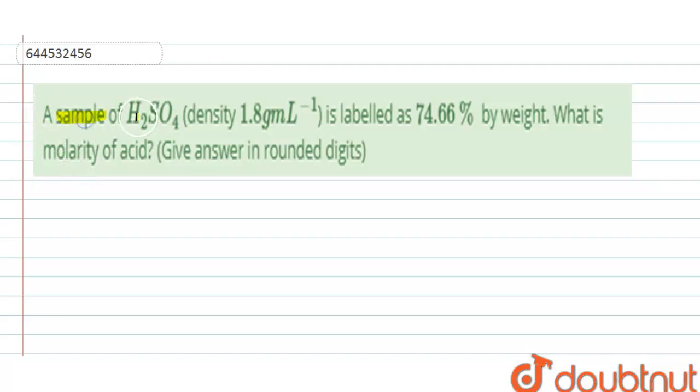A sample of sulfuric acid having density 1.8 gram per milliliter is labeled as 74.66 percentage by weight. Then what is molarity of acid? Give the answer in rounded digits. Here the sample of sulfuric acid is given.